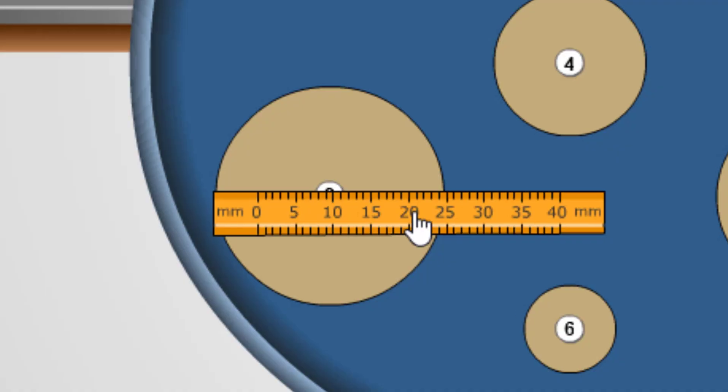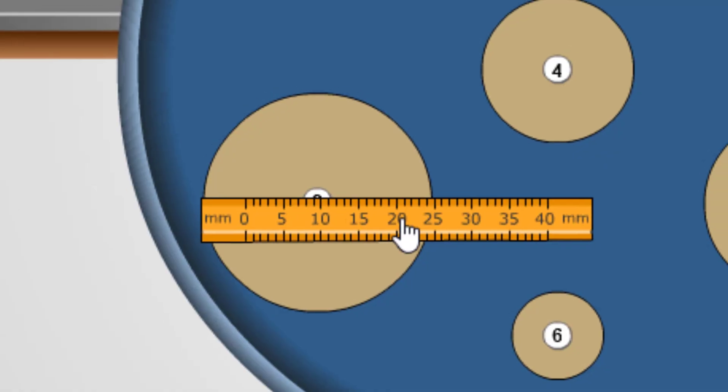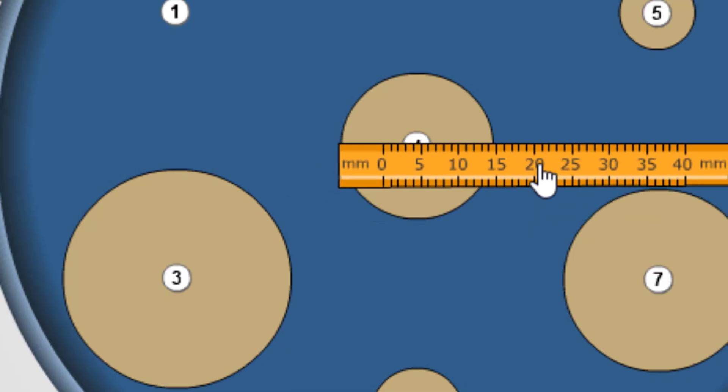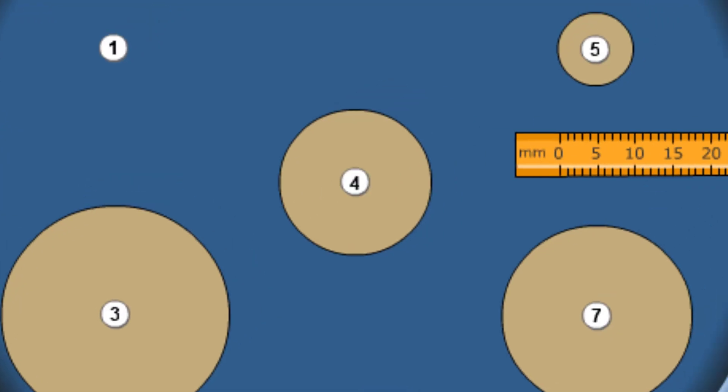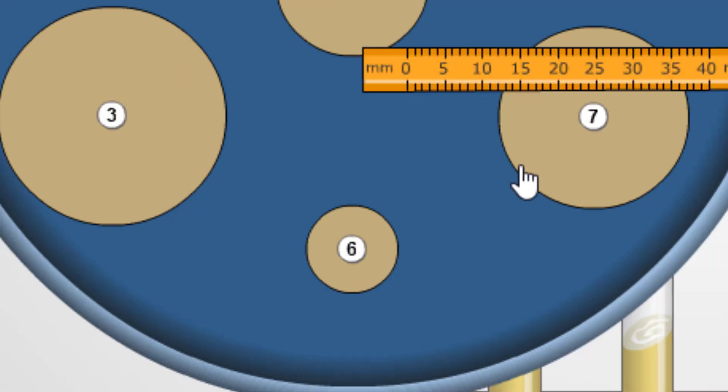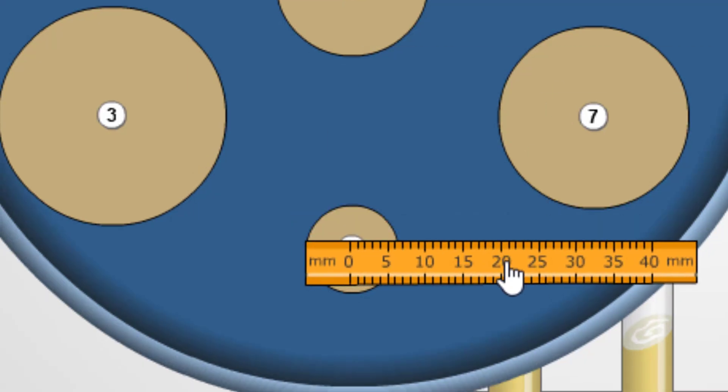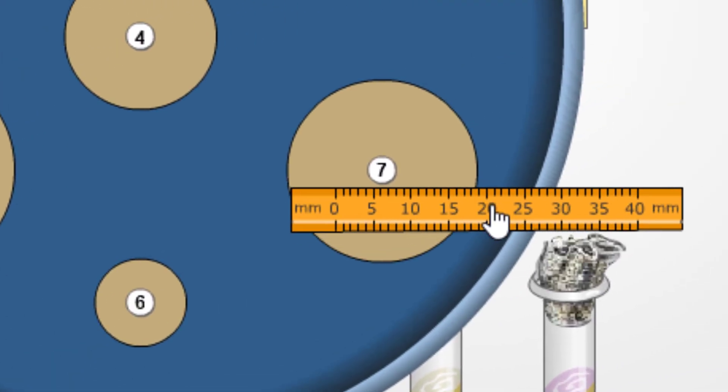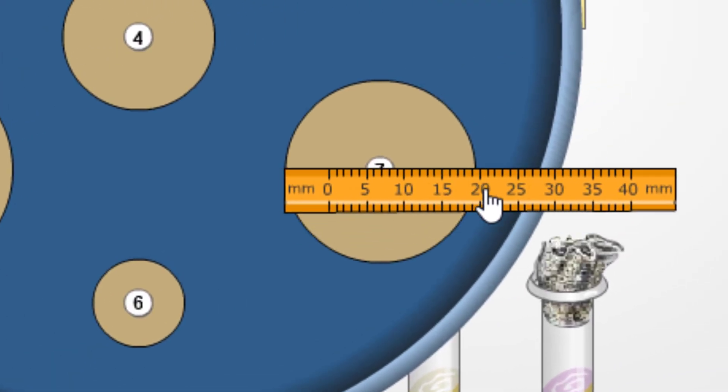Here's the zone of inhibition for disc number 3. The zone of inhibition for disc number 4. The zone of inhibition for number 5. The zone of inhibition for number 6. And finally, for number 7.